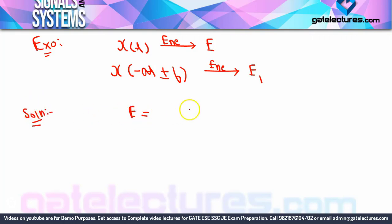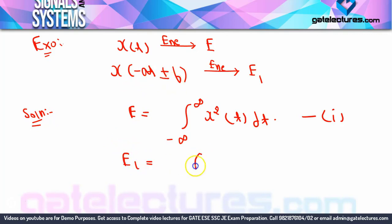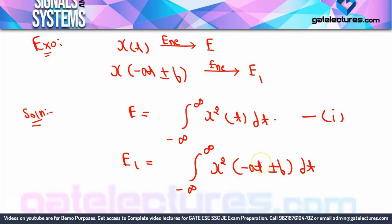The energy of x(t) is E, which means E = integral from −∞ to +∞ of x²(t) dt — this is equation 1. Now the energy E1 we need to find is: E1 = integral from −∞ to +∞ of x²(−at + b) dt. To write this in terms of E, let us substitute p = −at + b as a new variable.